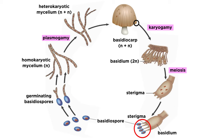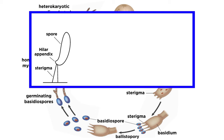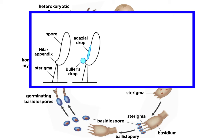Basidiomycetes that have spore-bearing surfaces open to the environment, such as gills, pores, or teeth, have a discharge mechanism known as ballistopory. These spores are connected to the basidia via cell projections called sterigma. The spores attached to the sterigma are shaped asymmetrically. There is a prominent bulge at the base of the spores called the hilar appendix. Fluid aggregates in the hilar appendix and the side of the spore. We call the spherical droplet at the hilar appendix the Buller's drop, and the fluid at the side of the spore is the adaxial drop.